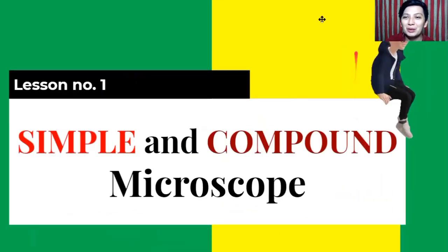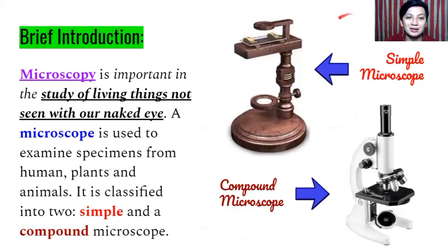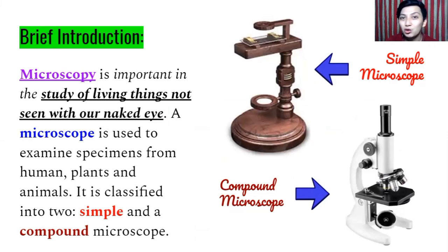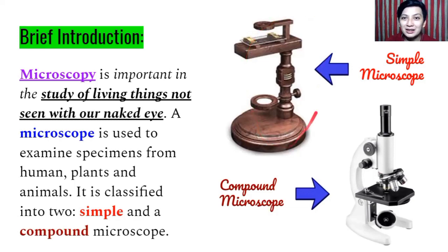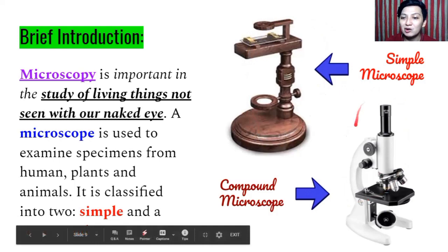For lesson number one, we will differentiate simple from compound microscope. To tackle this, let us have a short introduction. Basically, microscopy is important in the study of living things that are not seen by our naked eye, because not all things can be seen by our naked eyes. That's why we need the help of the microscope to see very tiny or minute objects. A microscope is used to examine specimens from humans, plants, and animals. It is classified into two examples: simple and compound microscope. This is what a simple microscope looks like, and this is what a compound microscope looks like.